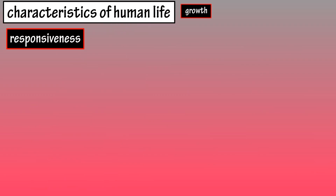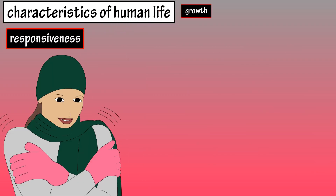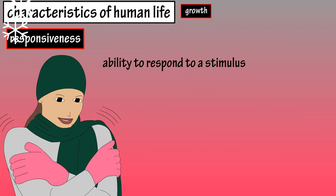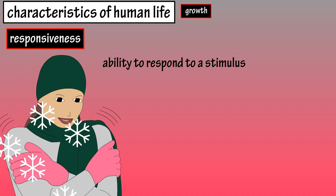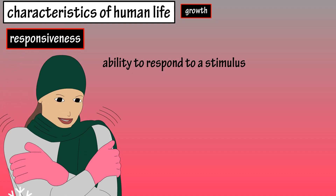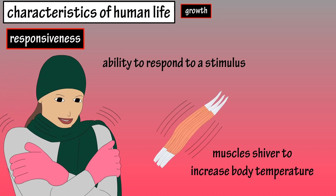Responsiveness is next. An organism, or the human body, is responsive, meaning it has the ability to respond to a stimulus. As body temperature drops when in a cold environment, the body responds by making the muscles shiver to increase body temperature.